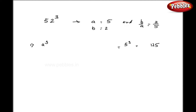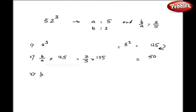As a second step, I will do b upon a multiplied by the previous answer, that is 125. So here I get 2 upon 5 multiplied by 125, which gives 50. In the third step, again I will do b upon a multiplied by the previous answer, which is 50. So I get 2 upon 5 multiplied by 50, giving 20.